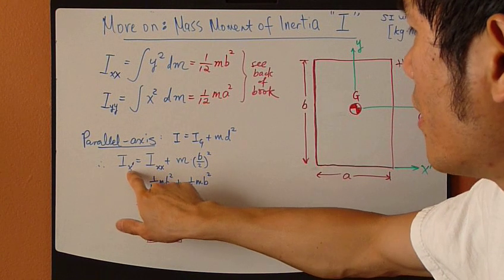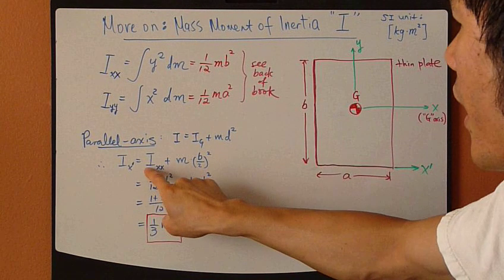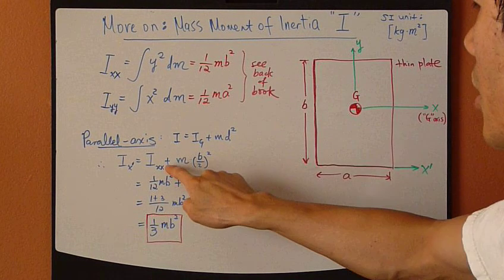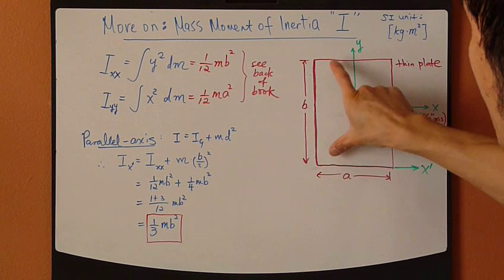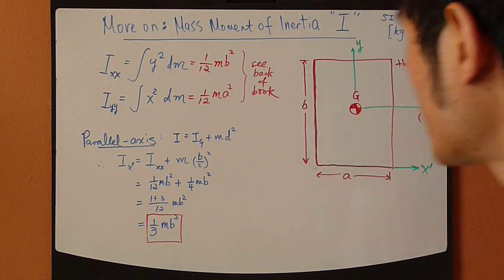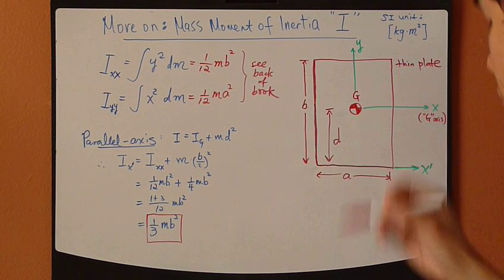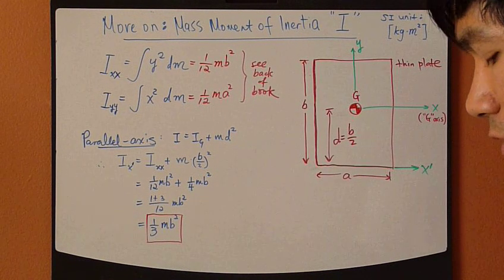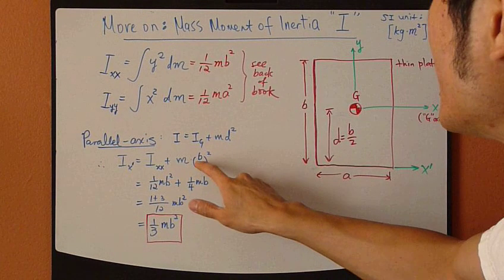Right, left-hand side, it's my I about x-prime axis. This term is my Ixx, this is my centroidal axis, plus m. Plus m, d is my distance between the two axes, which is this right here, and d is exactly half of b. So md².